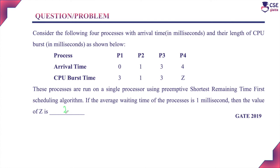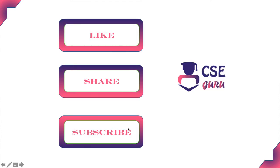If the Z value is 2 milliseconds, then we get the average waiting time of 1 millisecond. Thank you for watching this video.